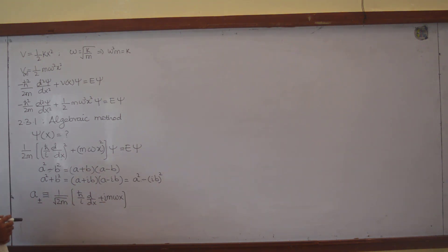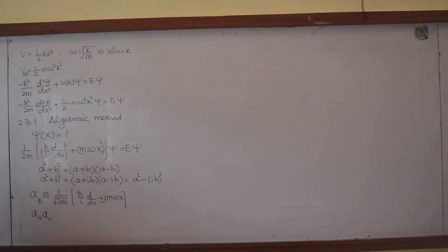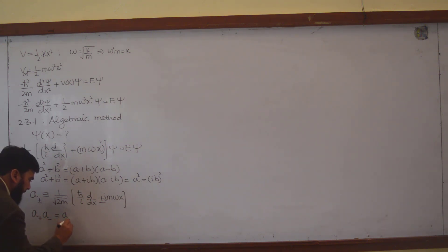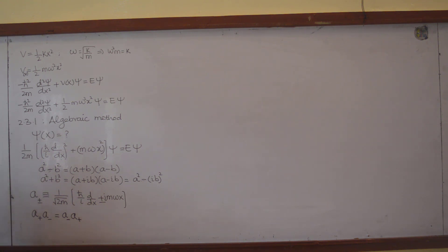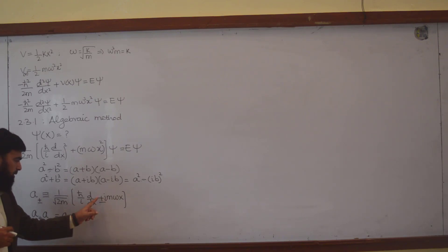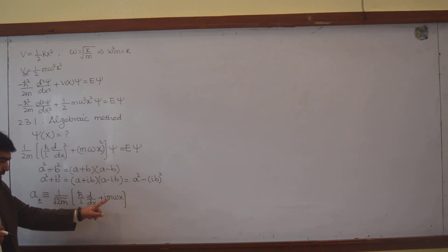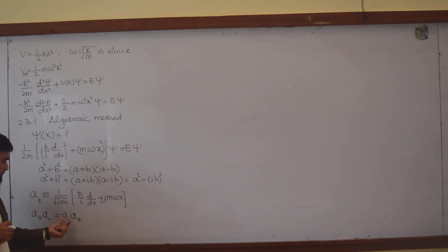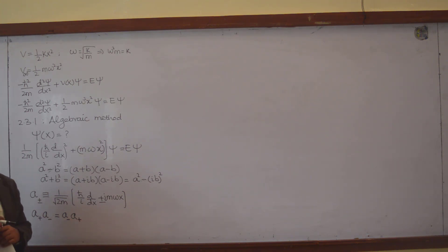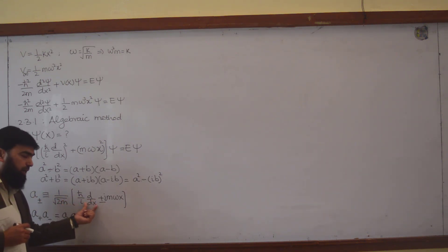Now what if I multiply A plus with A minus? Whether this will be equal to multiplying A minus with A plus? A plus has all terms with a plus symbol, and A minus has all terms with a minus symbol. Will they be equal? Yes — only in this situation if we did not have a derivative operator here.